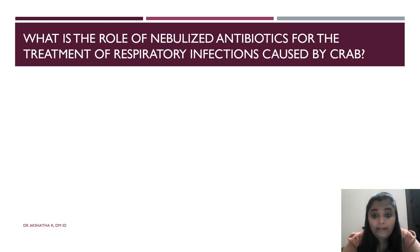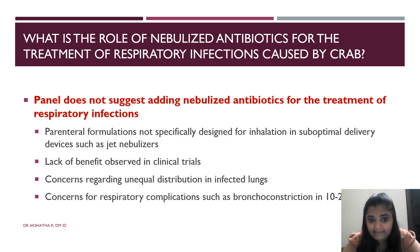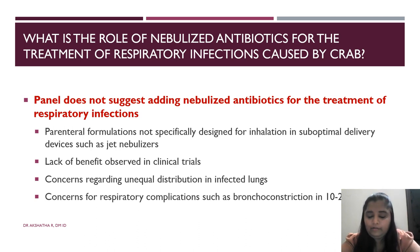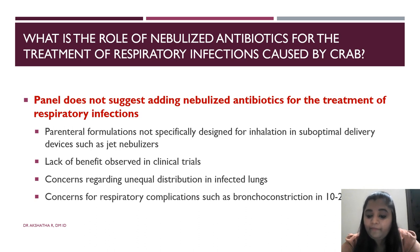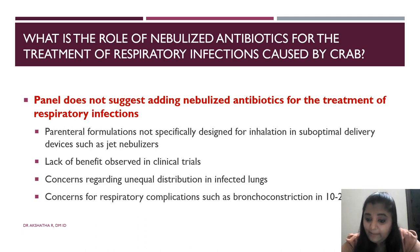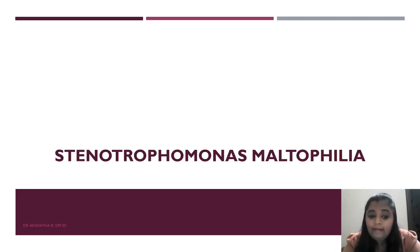Extended infusion high-dose meropenem should be used in moderate to severe CRAB. An important point: the combination of polymyxin and meropenem without a third agent is not suggested. You must use triple combination therapy — meropenem plus ampicillin-sulbactam plus minocycline, or meropenem plus ampicillin-sulbactam plus polymyxin B — for moderate to severe CRAB infection. For mild infection, single drug ampicillin-sulbactam can be given. Nebulized antibiotics are not suggested because the parenteral formulations are not designed for nebulization, leading to suboptimal delivery, there is lack of benefit in clinical trials, and there are concerns about unequal distribution and bronchoconstriction.